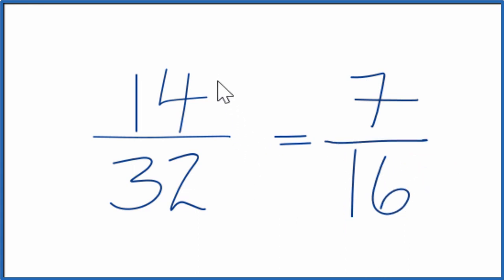If you divide 14 by 32 or 7 by 16, you'll get the same decimal answer because they're equivalent fractions, which is simplified or reduced 14 over 32 down to 7 over 16.